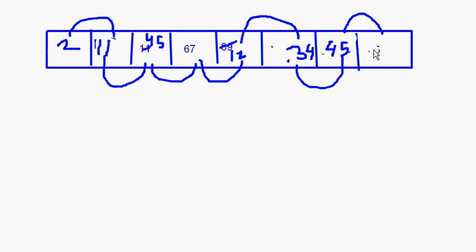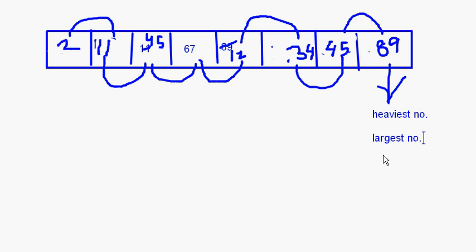Now 89 and 45 are compared, so 45 is less and this becomes 45 and this becomes 89. What you are seeing here is that 89, the heaviest or largest number, has come at the end. Next time through the loop, we will not take 89 into account — it has settled at the end.